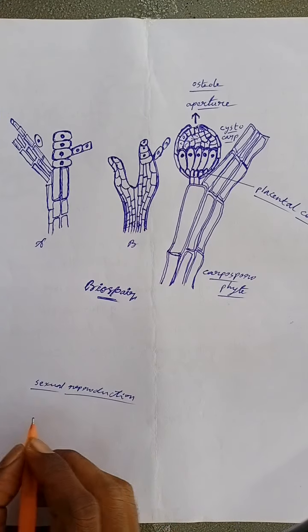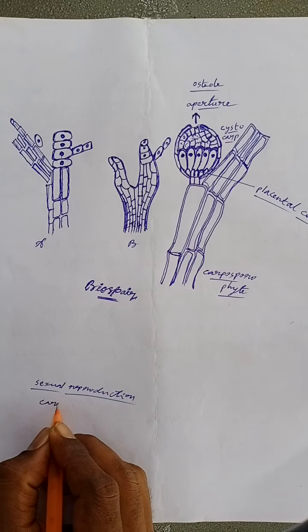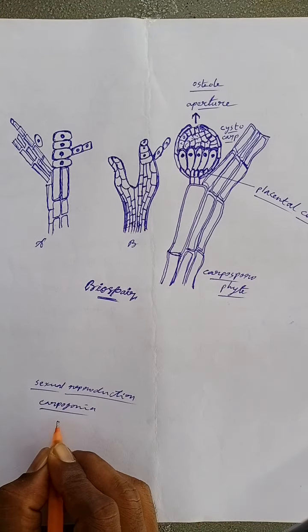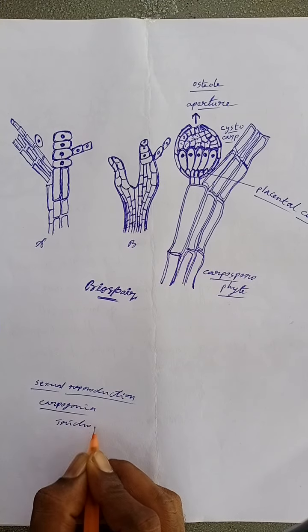The female sex organs are called carpogonia which are formed on the trichoblasts which are present on female gametophyte.